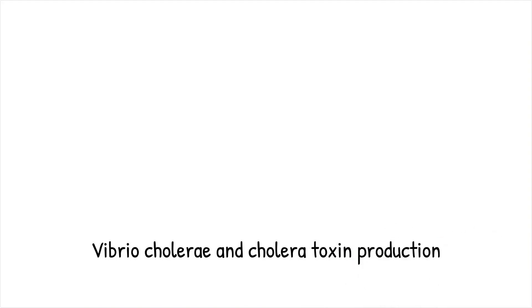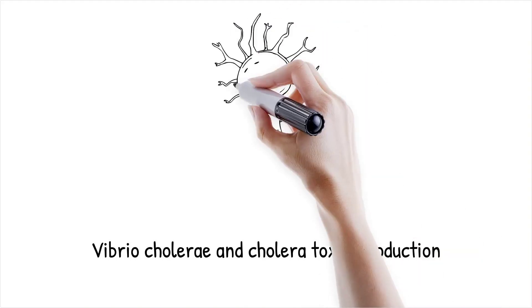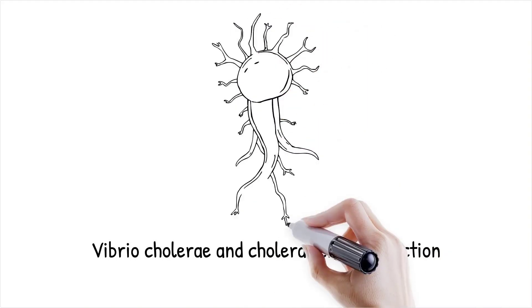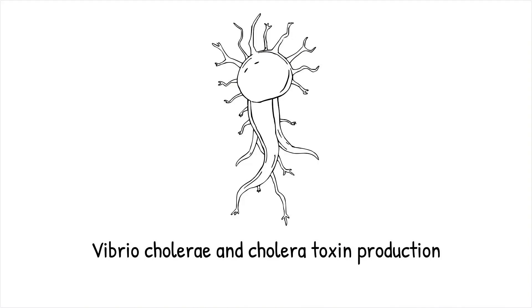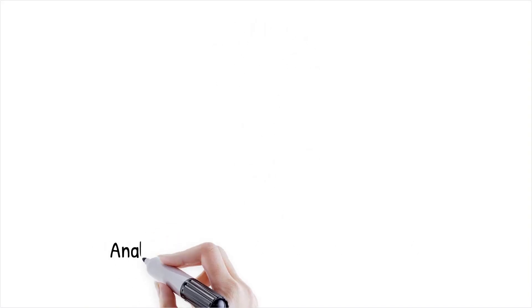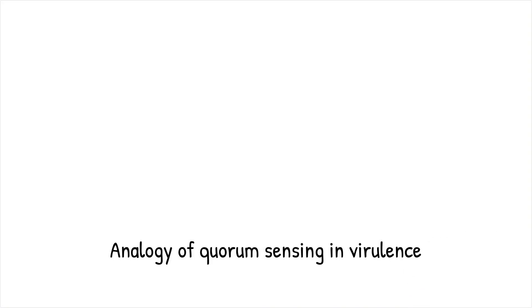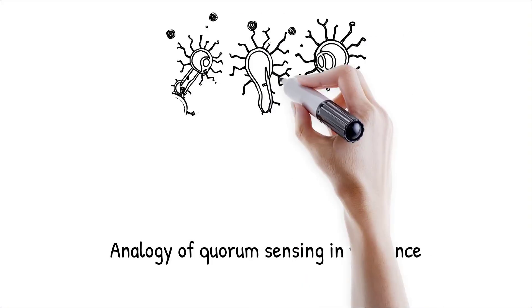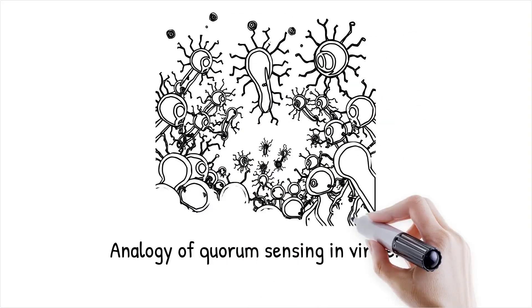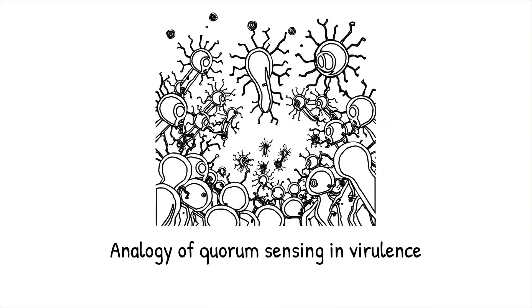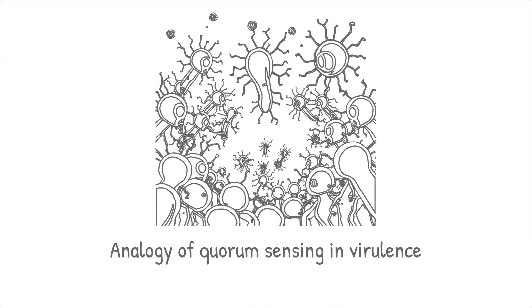In Vibrio cholerae, quorum sensing controls the production of cholera toxin, which is responsible for the disease's severe symptoms. Quorum sensing in virulence is like planning a surprise attack — bacteria wait until they have enough forces to ensure success.